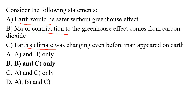Statement two: human activity produces greenhouse gases, and the amount keeps increasing — burning fossil fuels like coal, oil, and natural gas, and cutting and burning trees releases huge amounts of carbon dioxide. Statement three: climate change is not new; climate has changed even before humans began burning fossil fuels. Earth has gone through countless temperature fluctuations, from being a frozen planet to blazing tropical heat. The correct answer is option B — statements one and two are correct.